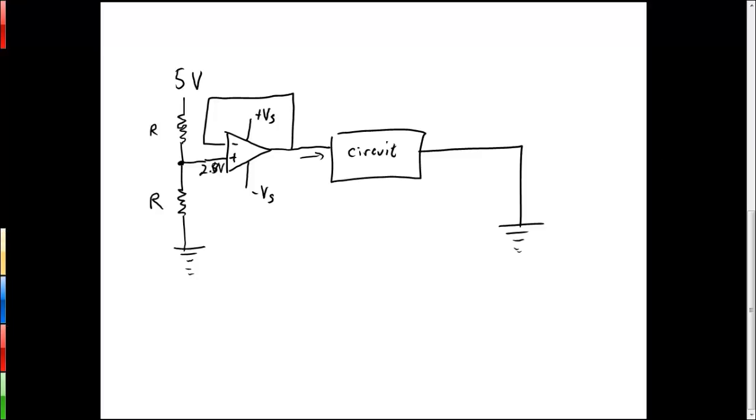So now we can make the resistance of the resistors fairly large so that we have very little current flowing through our voltage divider, so very little wasted power, but a nice stable 2.5 volts to feed into our voltage follower, and this allows us to supply the circuit with a nice constant 2.5 volts.